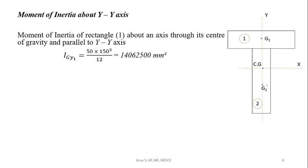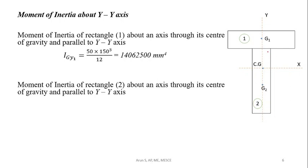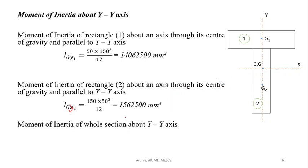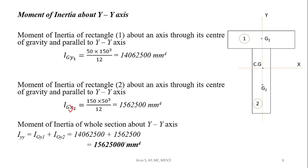The moment of inertia of rectangle 2 about G2 and parallel to the YY axis is given by db³/12. Here d is 150 and b is 50, so 150 × 50³ / 12 = 1,562,500 mm⁴, which is I_gy2. Since G1 and G2 lie on the same axis, we simply add them. So, I_yy = I_gy1 + I_gy2 = 14,062,500 + 1,562,500 = 15,625,000 mm⁴.